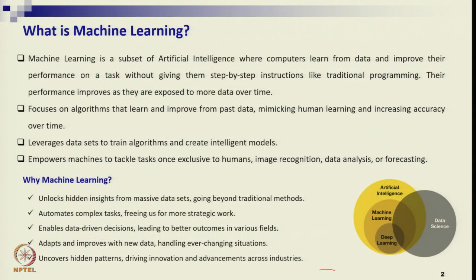One of the important aspects of machine learning is that it focuses on algorithms that learn and improve from past data, mimicking human learning and increasing accuracy over time. The more data that comes into the system, the better the machine behaves based on data patterns and predicts effectively. So the more new data enters the system, the more accurate the prediction model becomes.